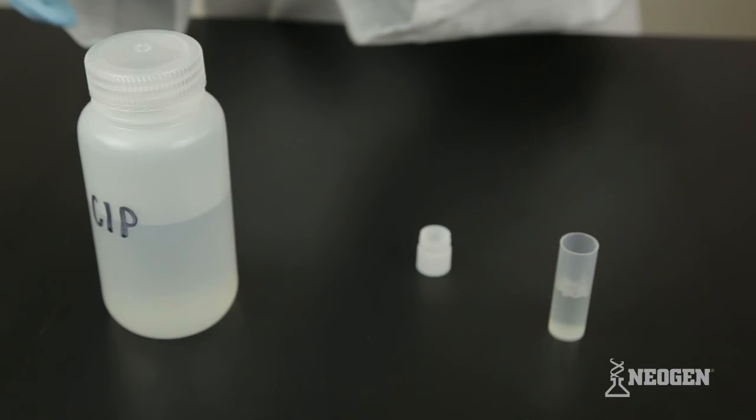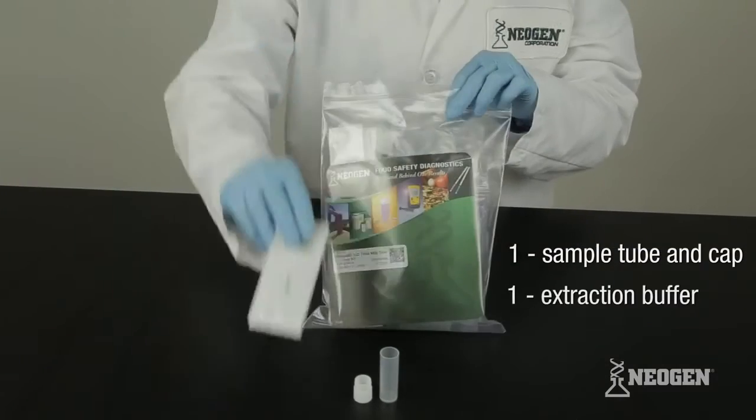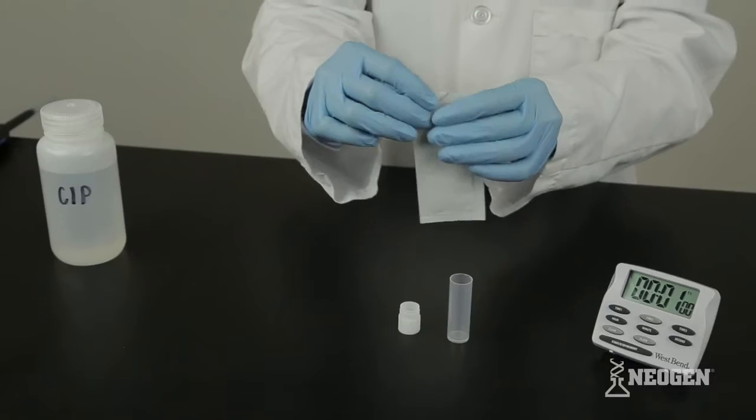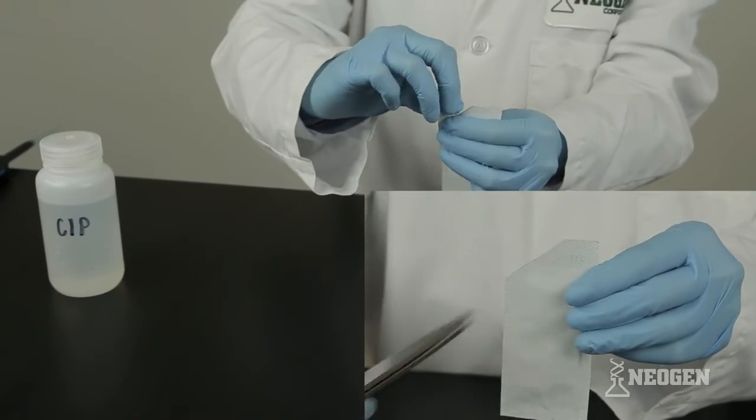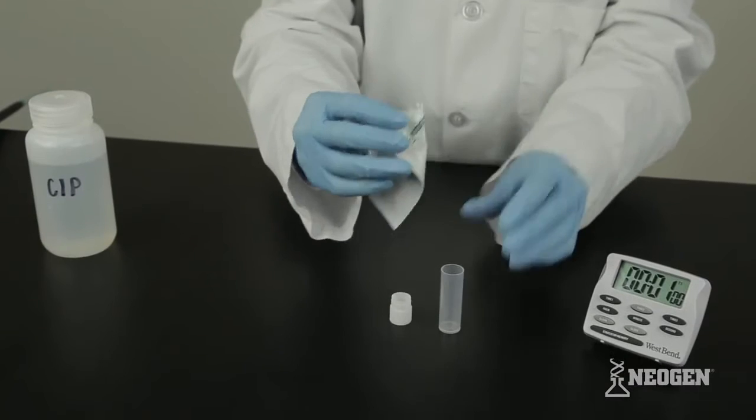To test a CIP rinse or liquid product, remove one sample tube and cap and an extraction buffer. The Reveal 3D test requires only a small amount of liquid sample be tested. Therefore, it is important to test a representative portion of the liquid. Carefully tear or cut off the top of the extraction buffer sachet and add the entire contents to the sample tube.